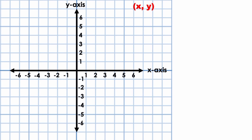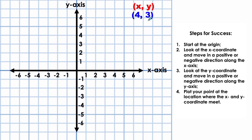There are four steps you can take to plot any point on the coordinate plane. To show this, let's plot the point with coordinates 4 on the x-axis and 3 on the y-axis. On the right side of your screen, I'm going to list four steps for success. First, start at the origin — the point where the x and y-axis intersect. Second, look at the x-coordinate. It's the first coordinate in the ordered pair, and move in either a positive or negative direction along the x-axis.